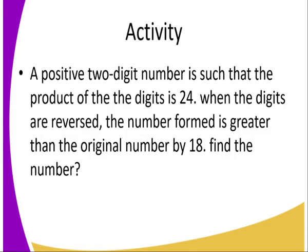Activity for today — this is the assignment you are supposed to do. A positive two-digit number: the product of the digits is 24. When the digits are reversed, the number formed is greater than the original number by 18. Find the number. This is where you are going to form the quadratic equation and then use it to solve.